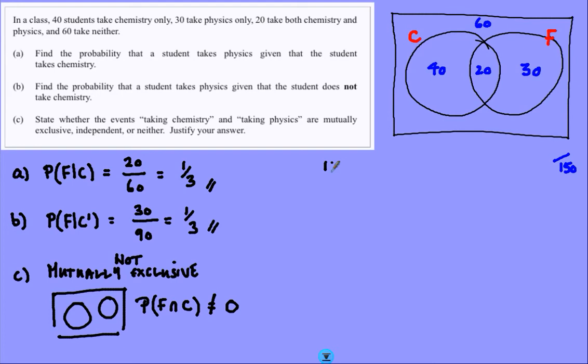Our second question is, are they independent? Slightly more awkward, this one. If they were independent, then the probability of taking physics would have nothing to do with the probability of taking chemistry.